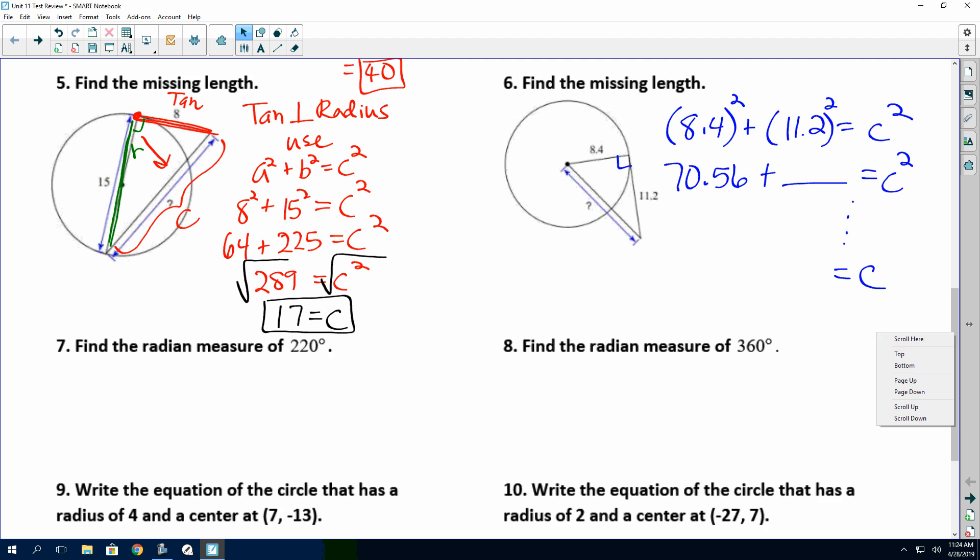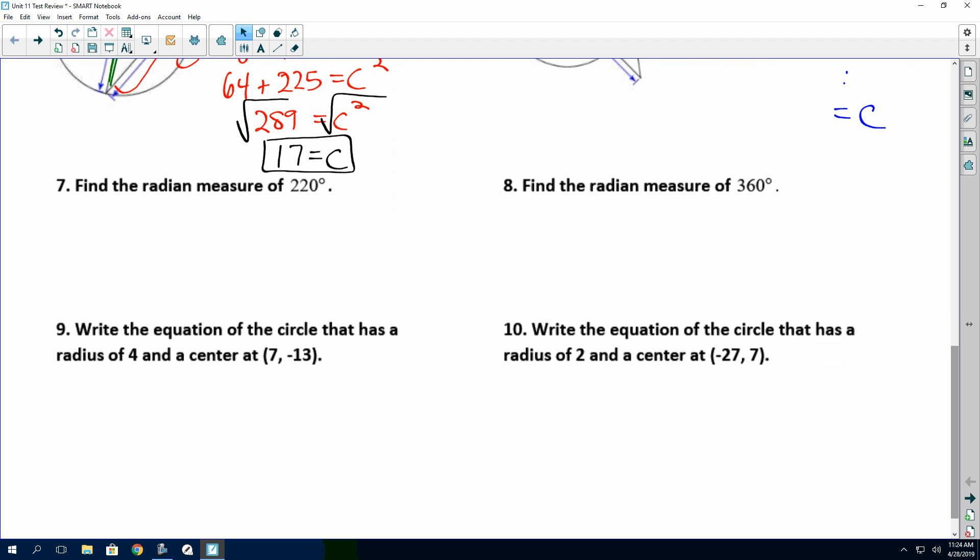All right, now, this next section here, on 7 and 8, they want you to find the radian measure. So they want you to go from degrees to radians. Anytime you go from degrees to radians, you remember what you're going to have to do? This should be just the end. You're going to multiply, and I'm going to abbreviate that, multiply by pi over 180. So what we have over here on number 7 is 220 degrees. I'm now going to multiply that by pi over 180.